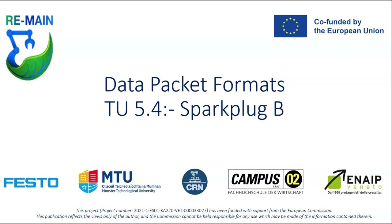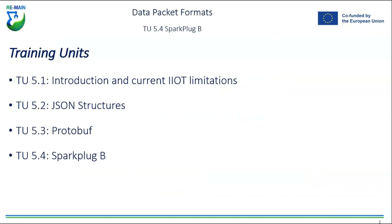We'll discuss how Spark Plug B overcomes some of the limitations of MQTT-based communications. We've covered introduction and current IoT limitations — the main limitation centering around MQTT is interoperability and standardized formats. We talked about JSON structures as a standard way of formatting data, and we looked at Protobuf as a way of serializing that data. Now we're going to look at Spark Plug B, which brings these structures together.